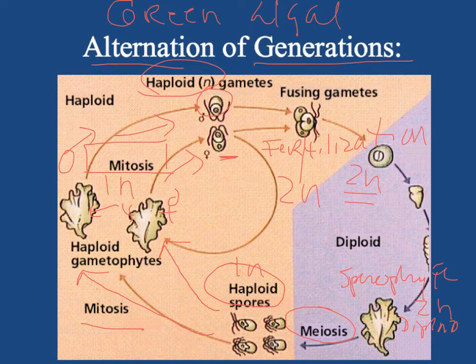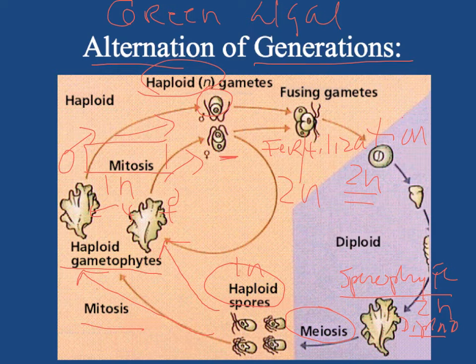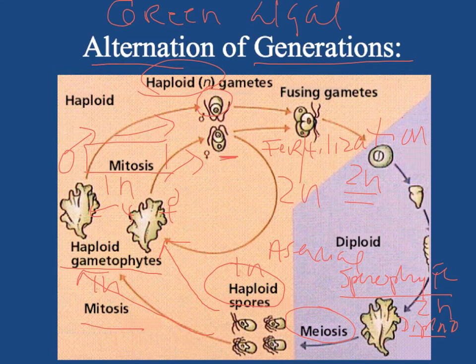In this slide we see the sporophyte form alternating with the gametophyte form. The sporophyte is 2N or diploid in chromosome number, and the gametophytes are 1N in chromosome number. We're alternating between 2N and 1N. Where spores are being made, this is asexual reproduction; where fusion of gametes is involved, this is sexual reproduction. So we have asexual and sexual, sporophyte and gametophyte, and diploid and haploid — all alternating in this alternation of generations life cycle.